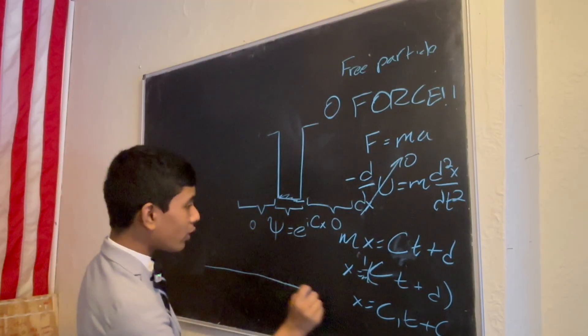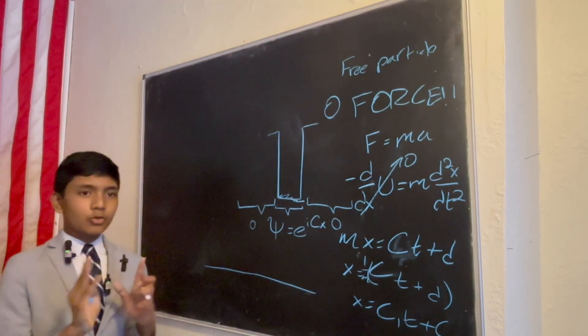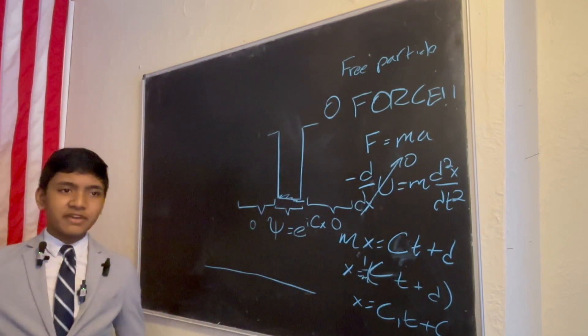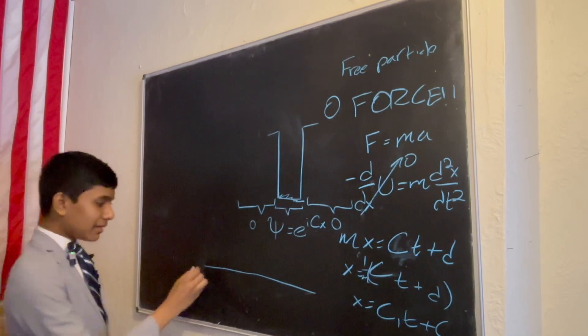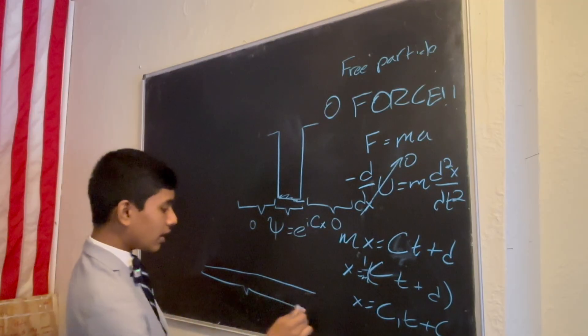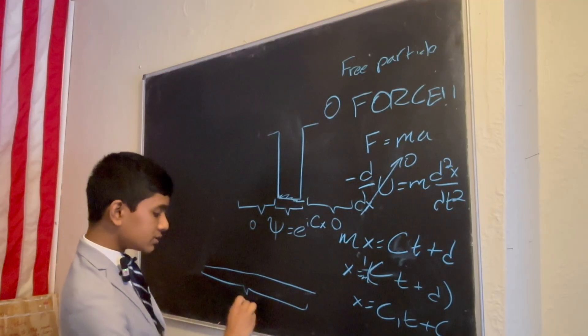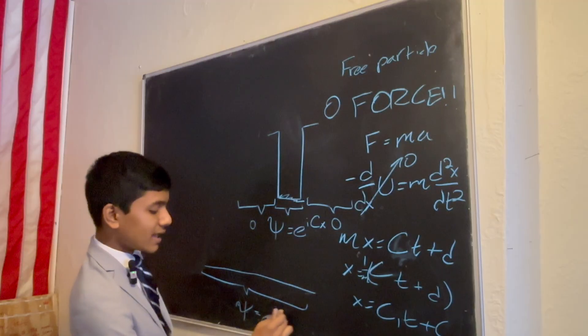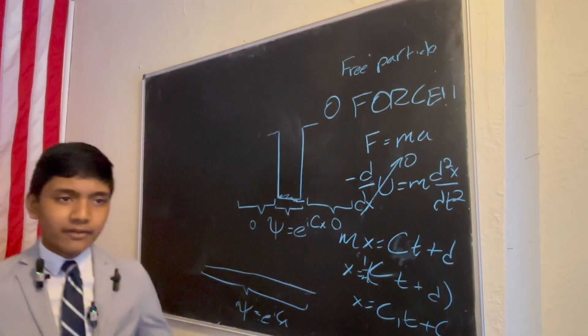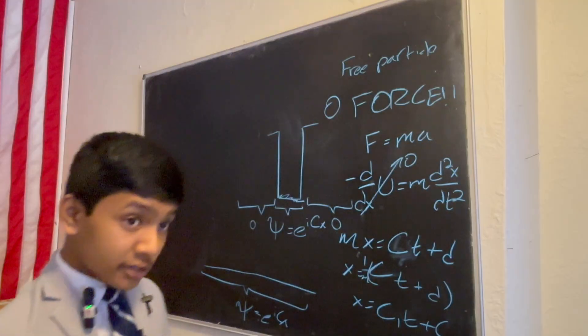But, the free particle is what happens when we take the width of the infinite square well and extend it to infinity. Now, that means the entire wave function is always e to the i cx. It's allowed to just fly free. And that is not a good thing.